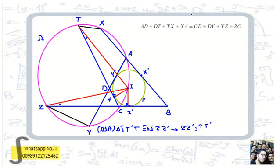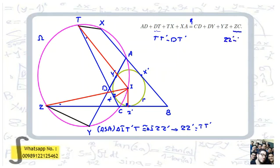Now we use TT' = ZZ' in our equality. We write DT = DT' - TT', and ZC = ZZ' - CZ'. We can now cancel TT' and ZZ' from both sides of the equation.